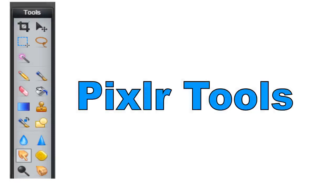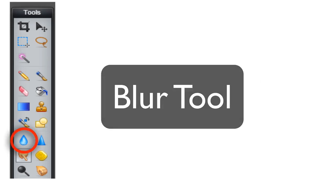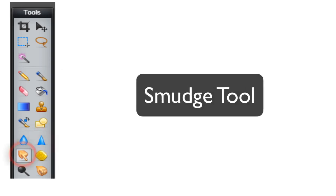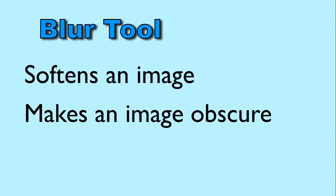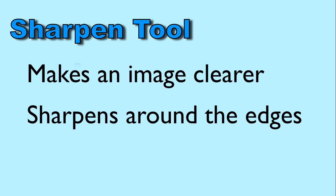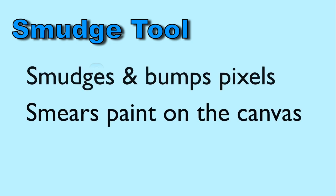Welcome to another Pixlr tutorial. This one is going to look at Pixlr tools, in particular the blur tool, the sharpen tool, and the smudge tool. The blur tool softens an image and makes it obscure. The sharpen tool makes an image clearer, sharpening around the edges. The smudge tool smudges and bumps pixels — it's like painting on the canvas.